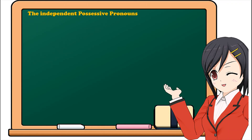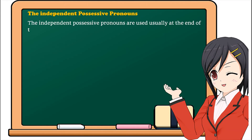Now let's see the independent possessive pronouns. The independent possessive pronouns are used usually at the end of the sentence or close to it, and they are not followed by a noun. This is why we call them independent — they don't require a noun. And these are the independent possessive pronouns.